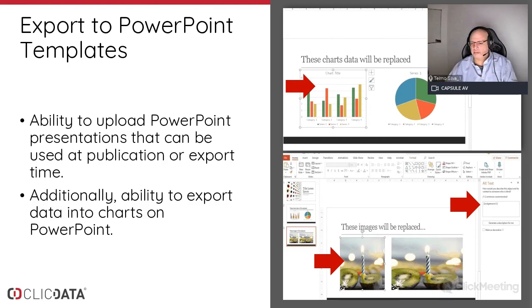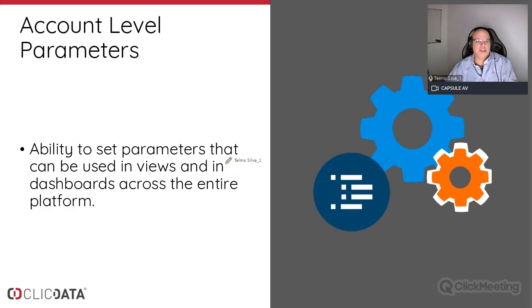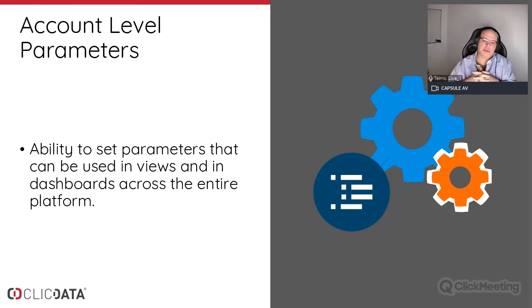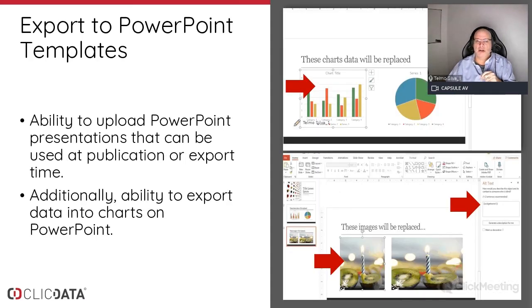Account-level parameters are coming soon in Q1. These are similar to user and team parameters but set at the account level — useful for general parameters like conversion rates that you use across multiple dashboards or views.